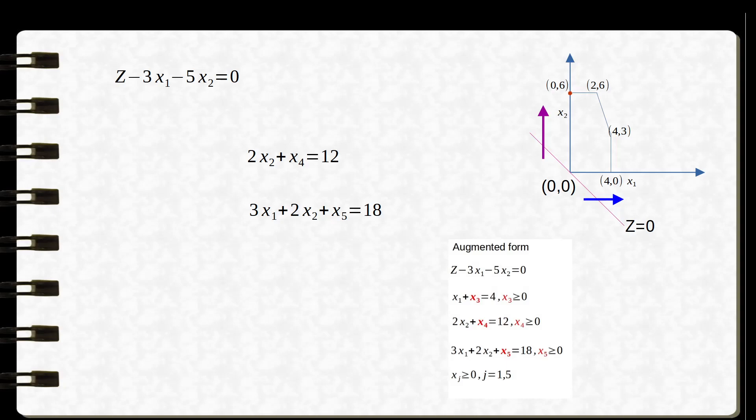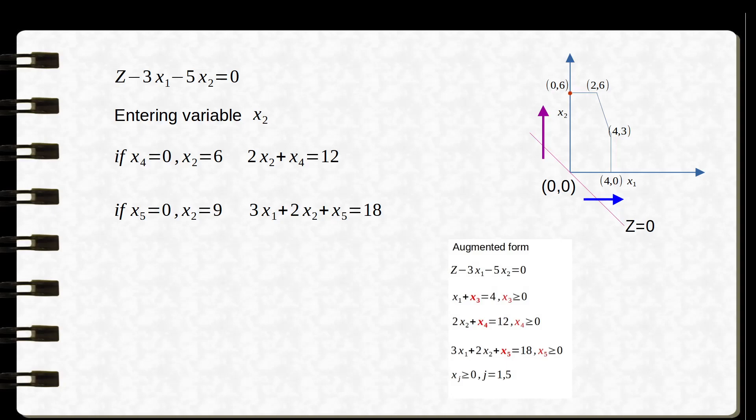x1 and x2 are the non-basic variables. Since x2 is going to have a value now, it is called the entering variable. Taking x4 = 0 in the equation 2x2 + x4 = 12 gives an increase in x2 of 6. Taking x5 = 0 in the equation 3x1 + 2x2 + x5 = 18, only these two equations contain x2, giving an increase of 9. We take the least of these increases, so x2 increases to 6 and x4 becomes 0.